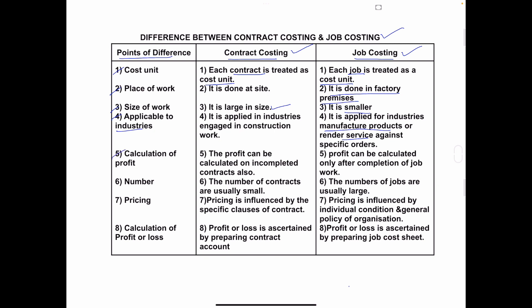Fifth: Calculation of Profit. In contract costing, profit can be calculated on an incomplete contract — they do not have to complete the full contract first. If a portion of the contract is completed, they can calculate the profit. But in job costing, they must first complete the entire order or job before calculating the profit.